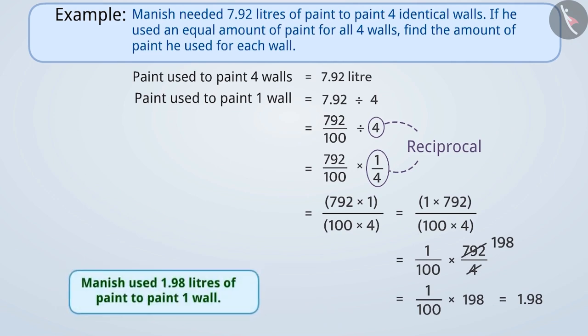So we can say that Manish used 1.98 litres of paint to paint one wall.